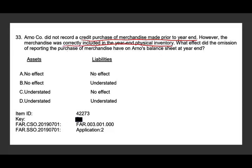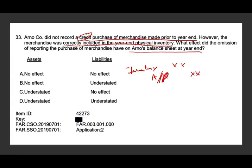What effect does the omission of recording the purchase of merchandise have on Arno's balance sheet at year end? Simply put, they made a purchase on credit, did not record it, but when they counted the inventory, the inventory was included. They did not debit inventory and credit accounts payable. However, since inventory was counted, there is no effect on assets — so options C and D are out. But they did not report the liability, therefore liabilities are understated because they did not credit accounts payable as they should have.